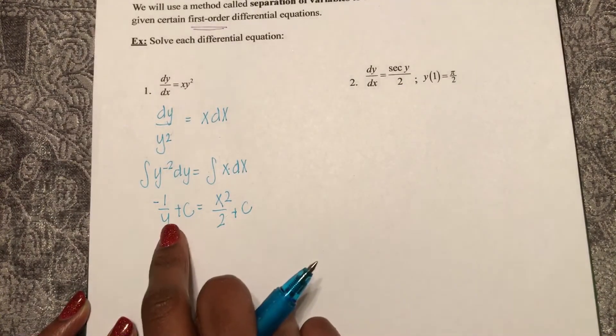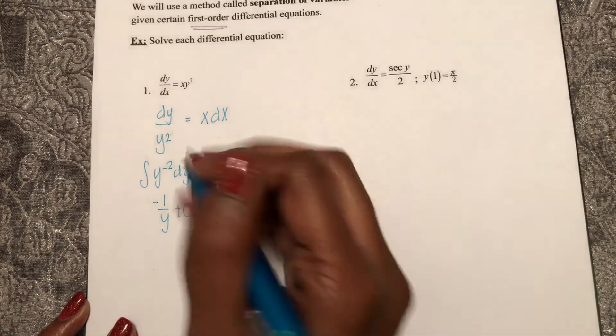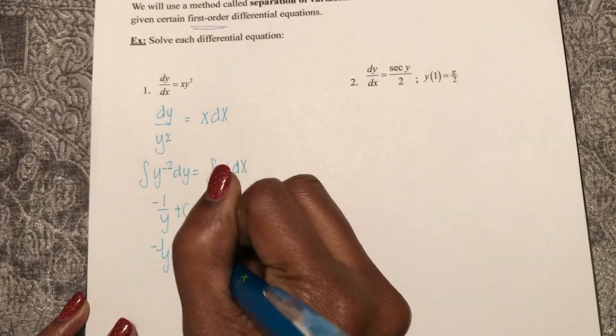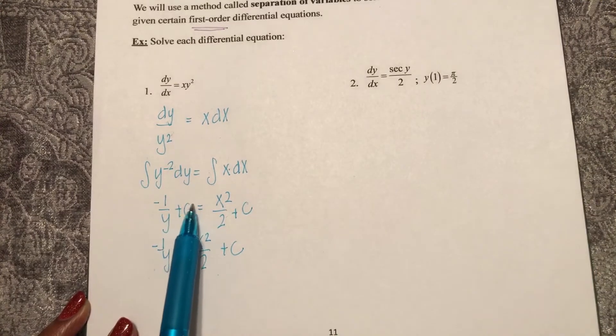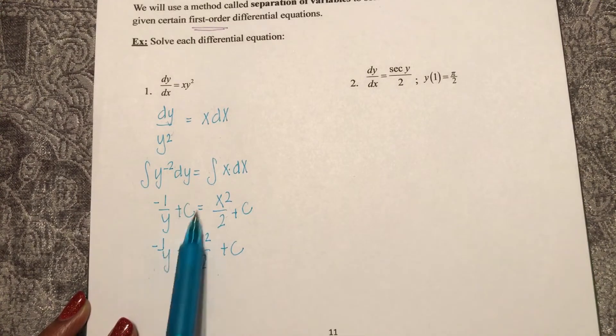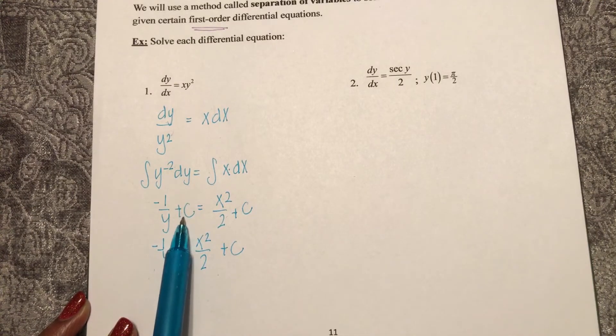Now I can solve for y, subtracting a constant. A constant minus a constant is still a constant. So from the beginning, if you don't want to write this plus c here, you don't have to.